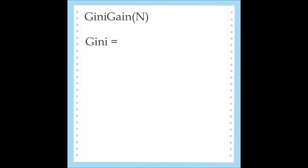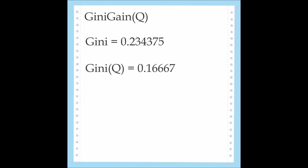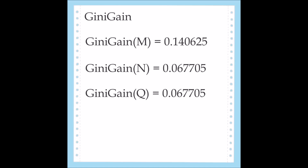We do the same process to calculate the gain of N. Take the Gini value for the system and the Gini value for N, and find the difference, which is the gain for N — in this case 0.067705. We use the same method to calculate the gain for Q. Now that we have calculated the gains for each attribute, we can compare them. We use the attribute with the largest gain as the splitting attribute in our decision tree.